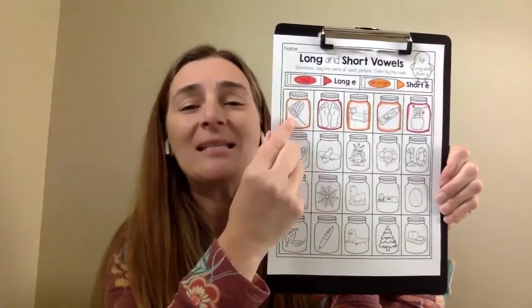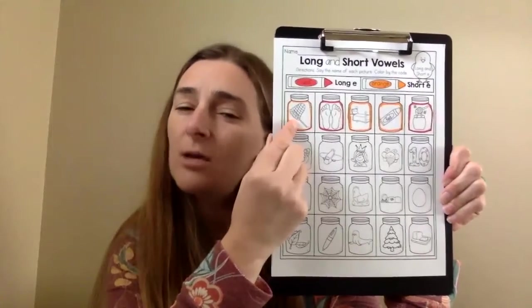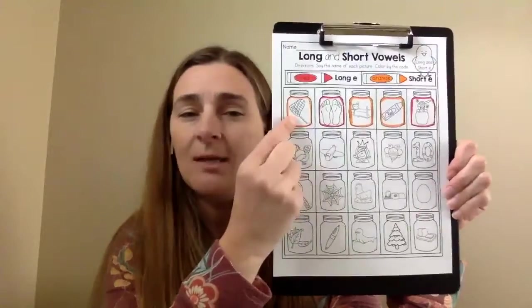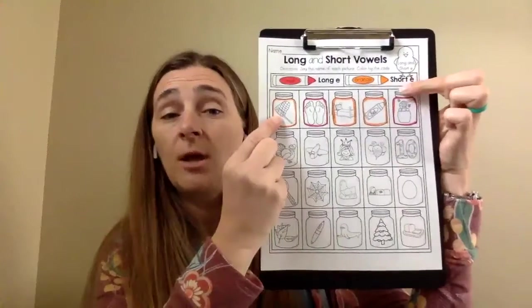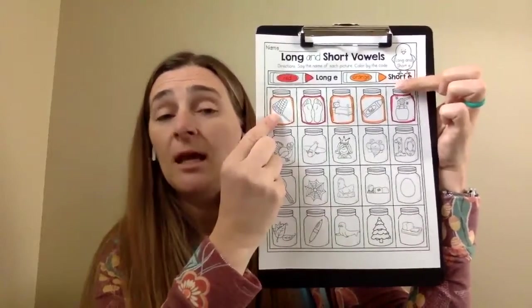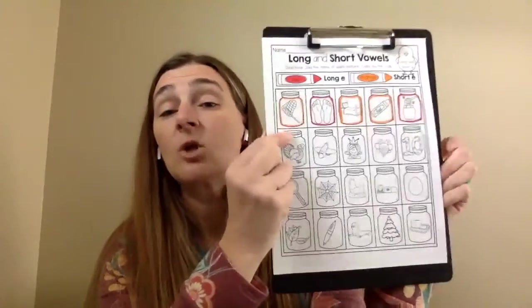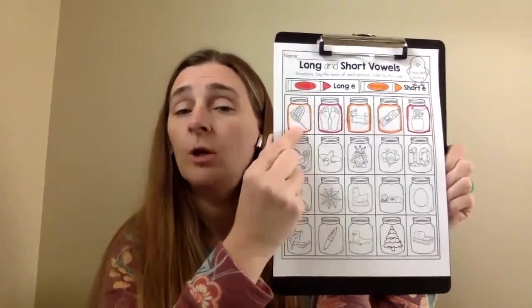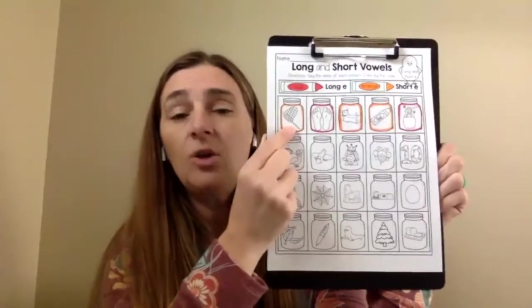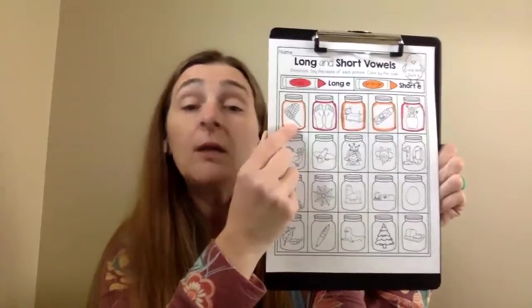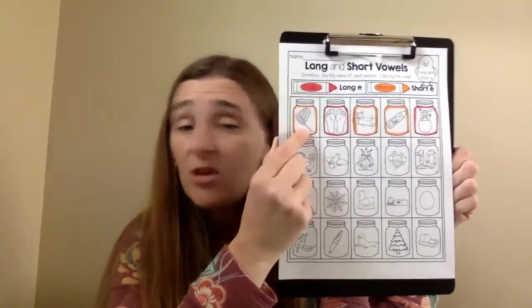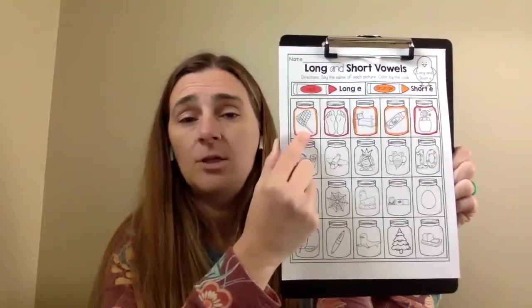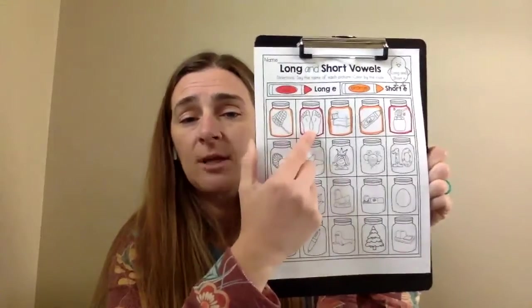It's a net. Net. Is that a long E or short E sound? Short E. Good job. So you can look up here at our key and it tells us that for short E, we're going to color it orange. So you're going to color the jar orange. Now, just like I've been telling you, you may color the whole jar if you want. If you just want to outline the jar, that's okay too.